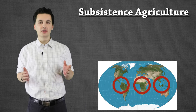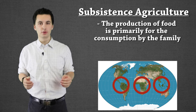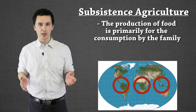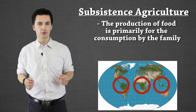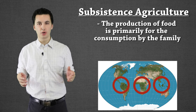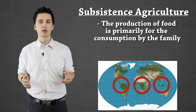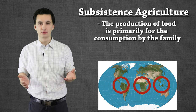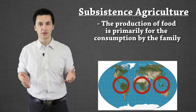The first thing we need to understand is the difference between subsistence agriculture and commercial agriculture. Subsistence agriculture is when people are producing food for consumption on the farm. They're producing food for their family — they're not producing it for sale. They're not trying to make a profit. They're primarily producing it to be able to survive, to eat the food and to live on the land.